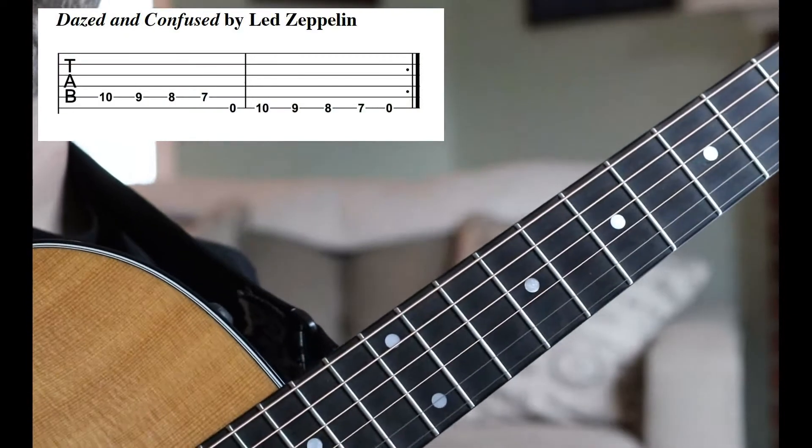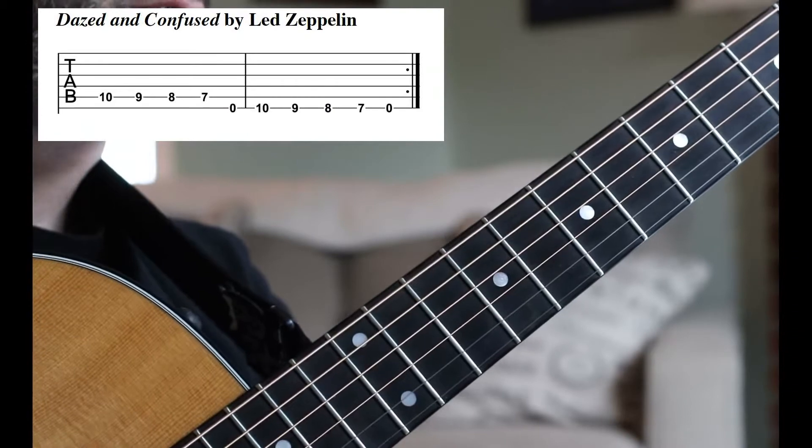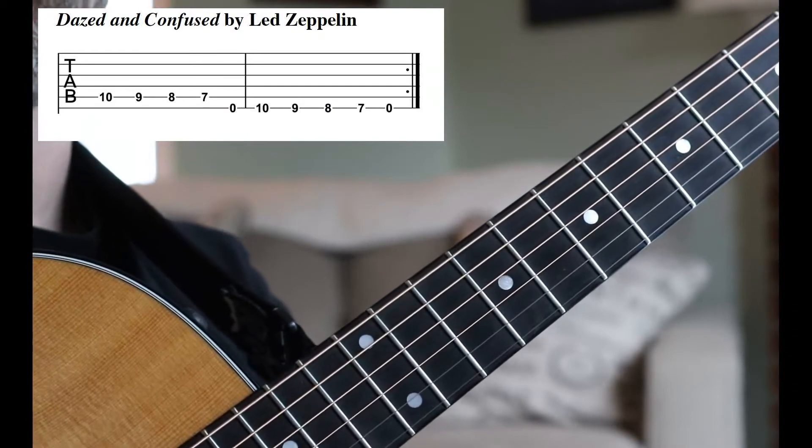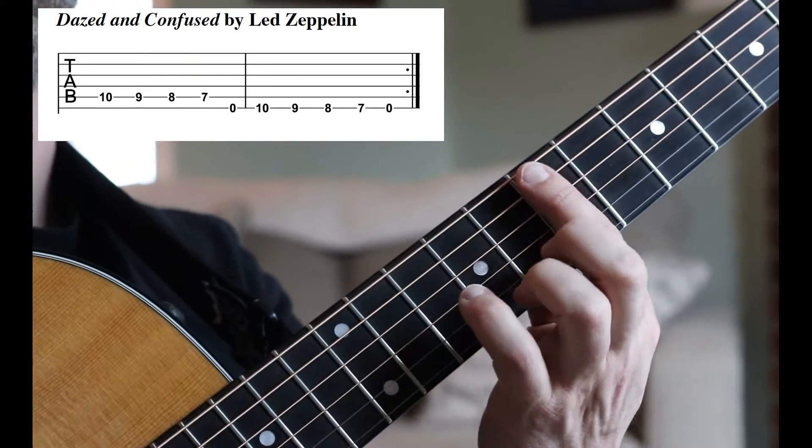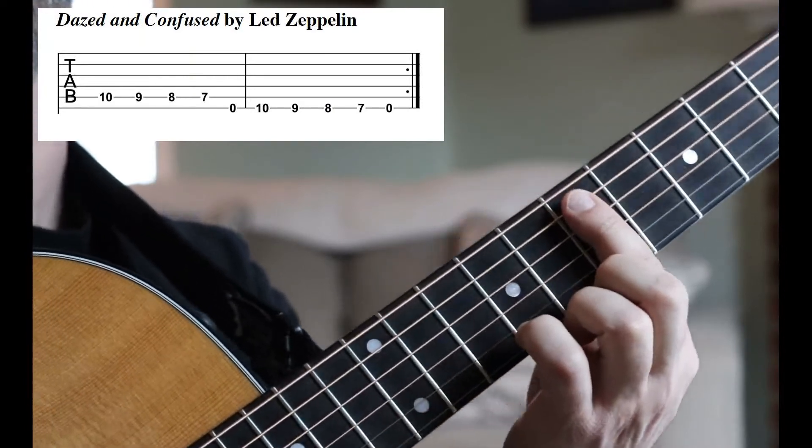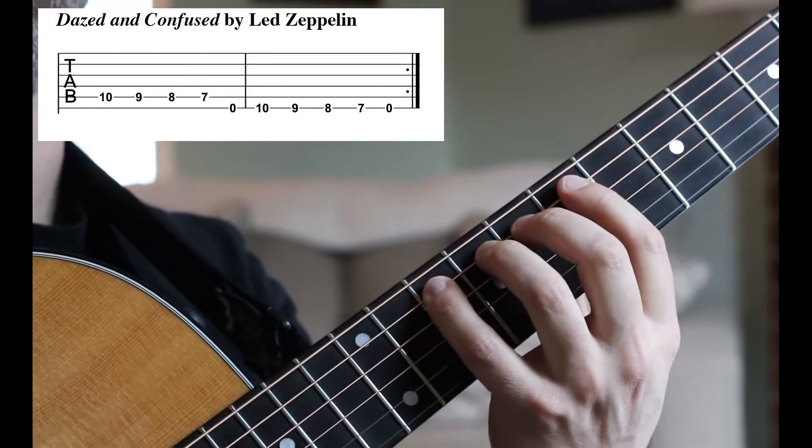Now the great part about this tab is that we need to remember that same thing. We need to get our hand position in the right spot. So if you look at the numbers, you've got 10s, 9s, 8s, and 7s. So the best thing to do here is put your first finger around the 7th fret and then your pinky will line up on the 10th fret.